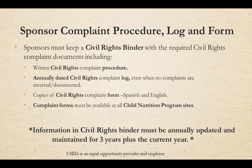Sponsors must keep a civil rights binder with the required civil rights complaint documents, including the following: a written civil rights complaint procedure stating the organization's policy on how they proceed when obtaining civil rights complaints; an annually dated complete civil rights complaint log, even when no complaints are received or documented; and all copies of annually dated civil rights complaint logs. Best practice is to keep three years plus the current year in your civil rights binder for state agency review. Copies of the civil rights complaint form in Spanish and English should also be accessible in the civil rights binder. Information in the civil rights binder must be annually updated and maintained for three years plus the current year. A sample complaint form can be found on the Idaho State Department of Education website link found at the end of this presentation.